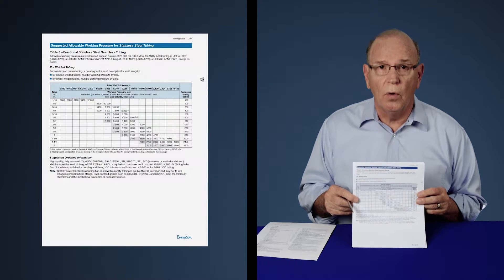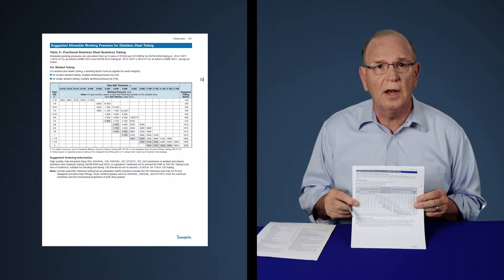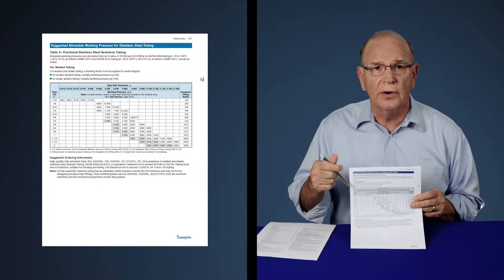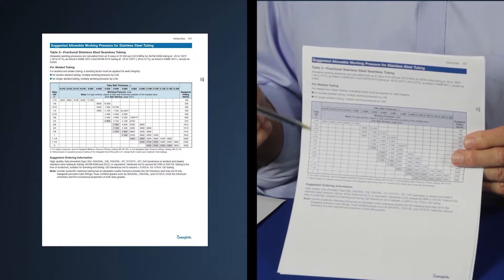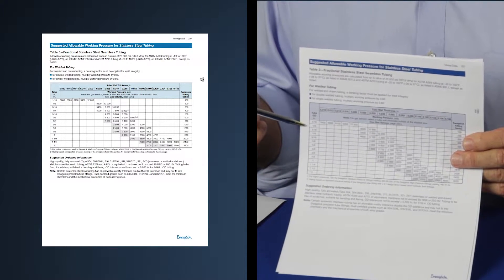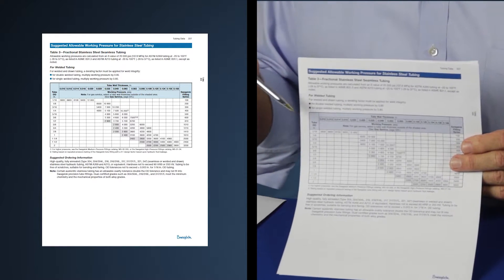When talking about wall thickness, the tubing data sheet has a chart for the suggested allowable working pressures at various wall thicknesses and various sizes. The way the chart works is the outside dimension of the tubing runs along the left side and across the top is the wall thickness.